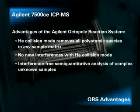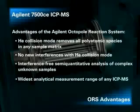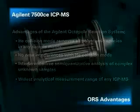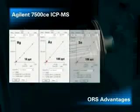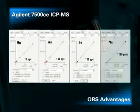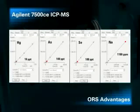More than 60 elements can be measured in a completely unknown sample in approximately one minute without the need to run calibration standards. The 7500 CE can measure mercury at single-figure parts per trillion plus sodium at greater than 1000 parts per million in the same analytical run. The calibration graphs show excellent linearity for mercury down to the 10 parts per trillion level, arsenic and selenium down to 100 parts per trillion, and sodium at 1180 parts per million — all achieved in the same run. The ability to measure elements over a wide concentration range in a single analysis clearly demonstrates the power of the ORS.